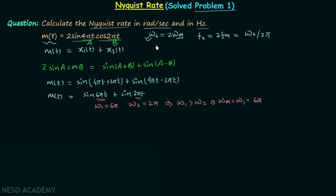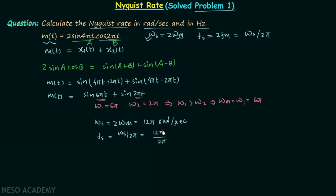From ωm it is straightforward to get ωs = 2·ωm = 2×6π = 12π radians per second. Then fs = ωs / 2π = 12π / 2π. The radians cancel, leaving units of 1/second, which is hertz. So fs = 6 Hz.